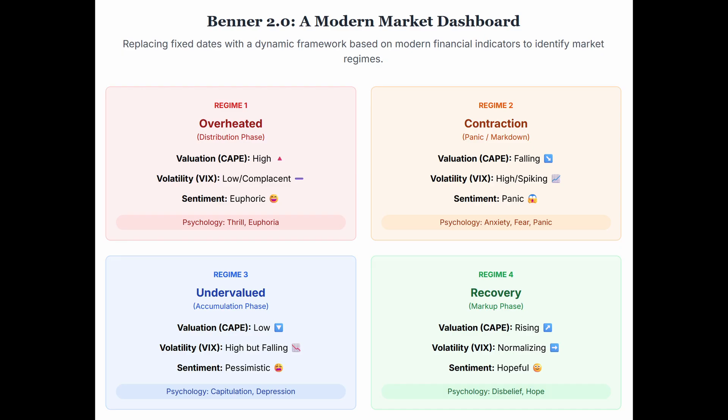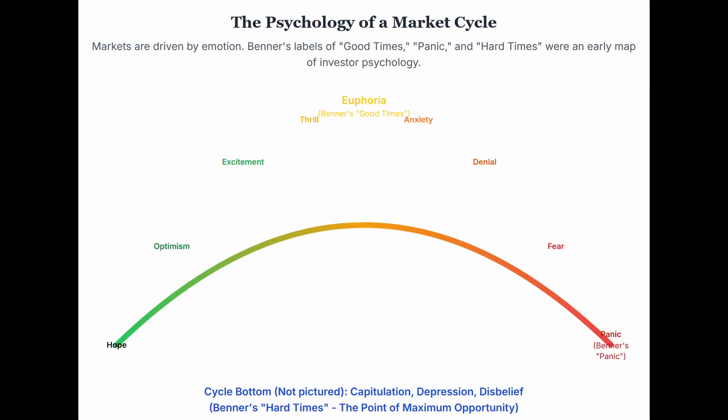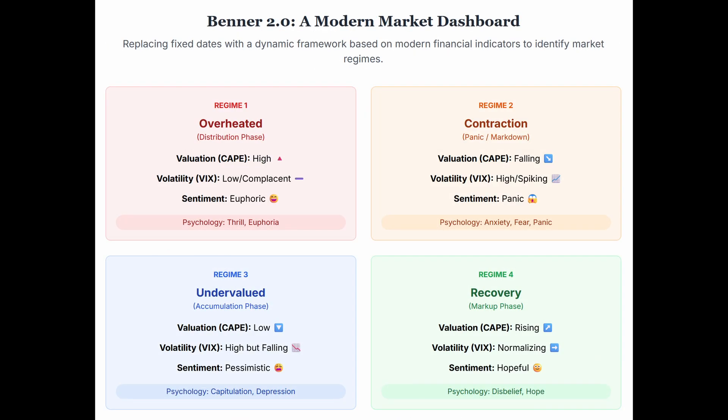Think about that classic wall street diagram showing the cycle of market emotions — from disbelief up to euphoria, then down through anxiety, denial, panic, capitulation, depression. Map Benner's terms onto it: 'good times' when he says sell aligns almost perfectly with thrill and euphoria — selling then is smart but hard because of FOMO. His 'panic' is obviously panic and capitulation. His 'hard times' to buy mirrors depression and disbelief — buying then is usually right long-term but feels awful.